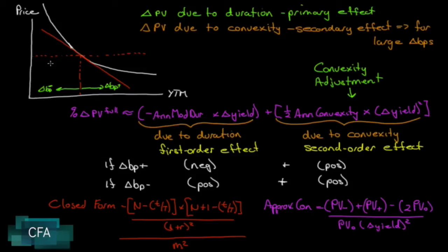If we have a price change due to duration, all we're doing is extending the price up to the tangent line. Notice that there's a gap between the tangent line and the actual curve for the bond price.